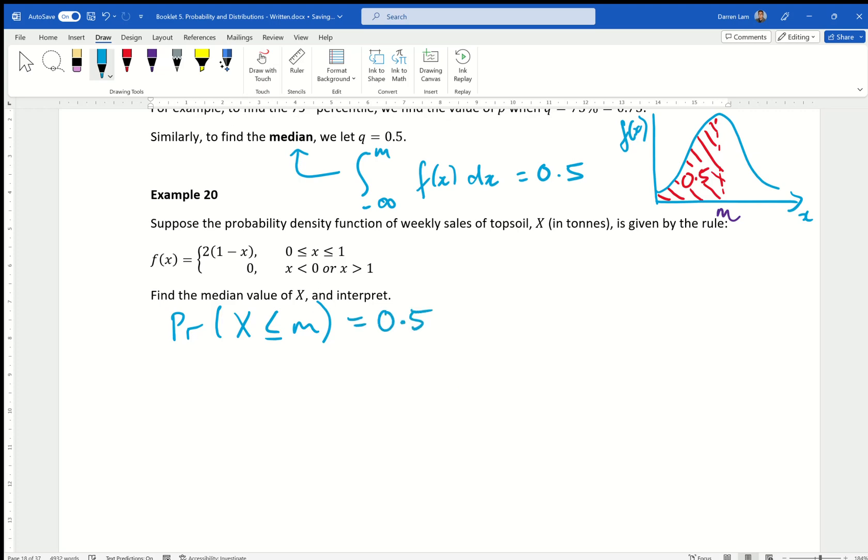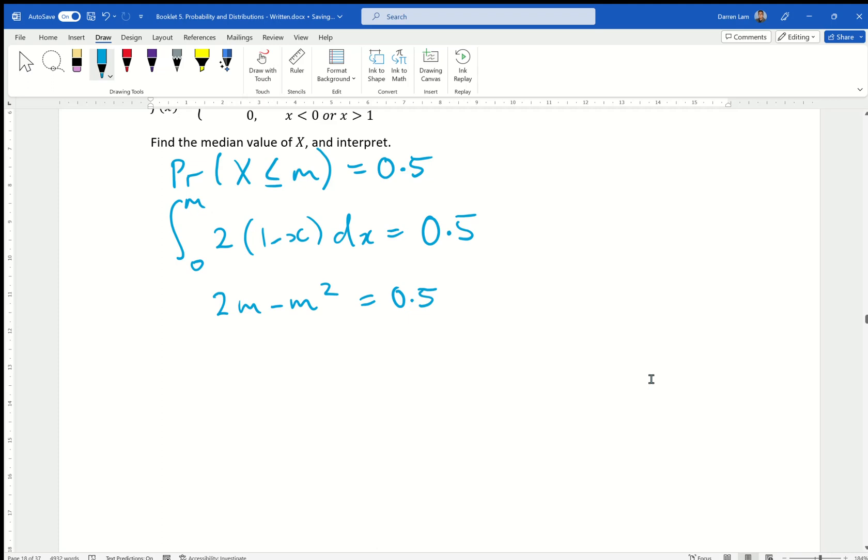And, of course, it makes sense to say the other way around. If we wanted to write x is greater than or equal to m, that's fine. Of course, you'll have to flip your formula around, but we'll just stick to this one in the meantime. Of course, that is the same as saying 0 to m of 2 bracket 1 minus x dx equals to 0.5. And because we're gods at integration already, I'm going to skip straight to that step of 2m minus m squared equals 0.5. That's just your integration.